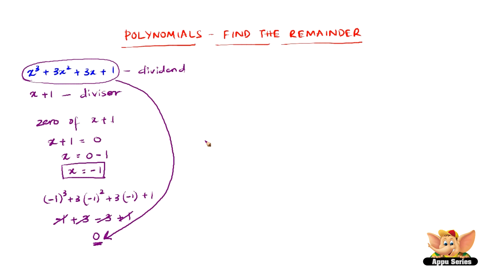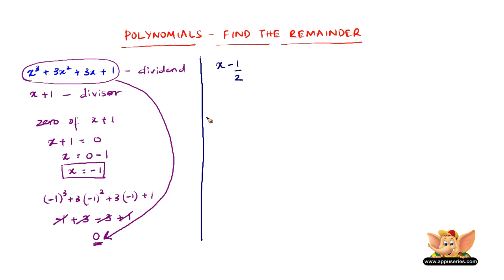Now let us take the same dividend, that is x cube plus 3x squared plus 3x plus 1. Let us see what is the remainder when it is divided by x minus 1 by 2. So again, the zero of x minus 1 by 2 is nothing but x minus 1 by 2 equals 0, and x equals 1 by 2.